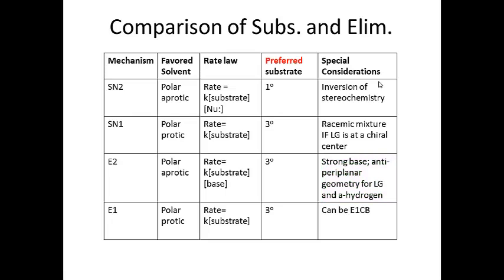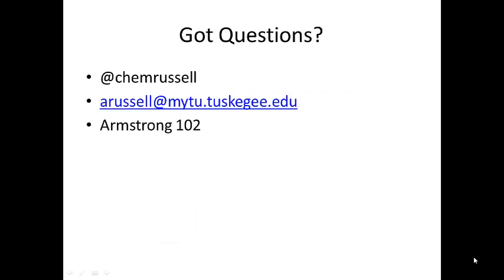For E2, you need a strong base and your leaving group and alpha hydrogen must be anti-periplanar. For E1, remember it is similar to SN1 all the way up until the elimination actually happens, and E1 can also occur by the E1cb mechanism where the conjugate base comes in and deprotonates the carbocation intermediate. As always, if you have any questions you can tweet, email, or drop by my office.